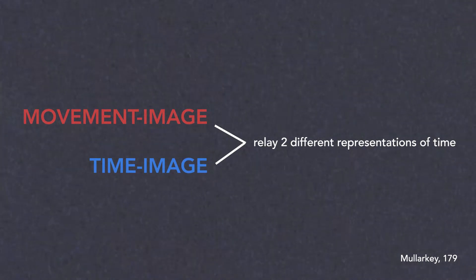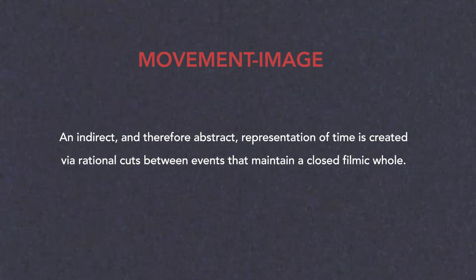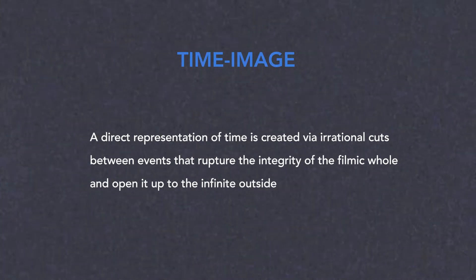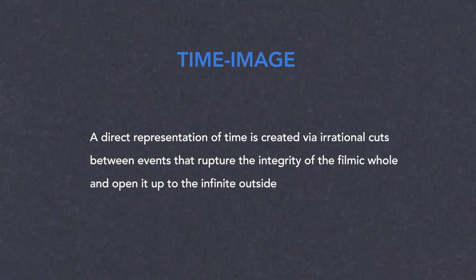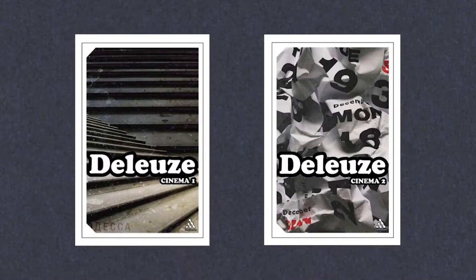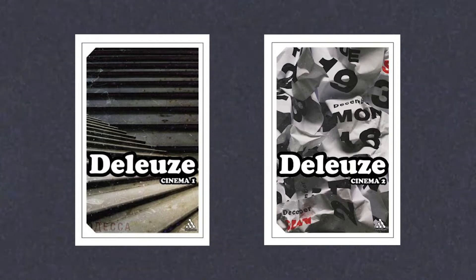In the movement-image, an indirect and therefore abstract representation of time is created via rational cuts between events that maintain a closed filmic whole. Whereas in the time-image, a direct representation of time is created via irrational cuts between events that rupture the integrity of the filmic whole and open it up to the infinite outside, or as Ronald Bogue terms, a non-chronological vertical present. Explication of these two regimes, and the taxonomy of signs that constitute them, is the main focus of the two cinema books. Although his writing is notoriously difficult at times to decipher, Deleuze provides one of the most profound and rewarding ruminations on the medium. For the patient reader, I would recommend starting from the beginning of Cinema 1 and working your way through to the end of Cinema 2 chronologically.